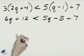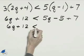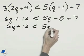We'll combine the like terms on the right. 6q plus 12, less than 5q plus 2.